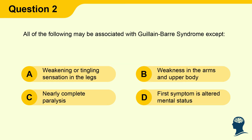Question 2: All of the following may be associated with Guillain-Barré syndrome except: A) Weakening or tingling sensation in the legs, B) Weakness in the arms and upper body, C) Nearly complete paralysis, D) First symptom is altered mental status.